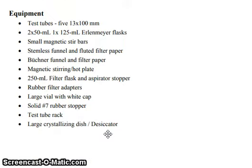What equipment do you need for this experiment? First, test tubes — five 13x100 mm tubes, two 50 ml or one 125 ml Erlenmeyer flask, small magnetic stir bars, stainless funnel and fluted filter paper, Buchner funnel and filter paper.